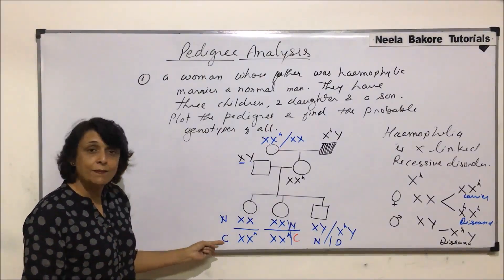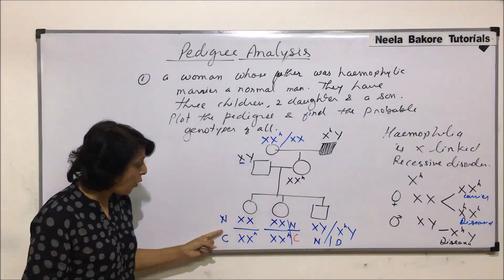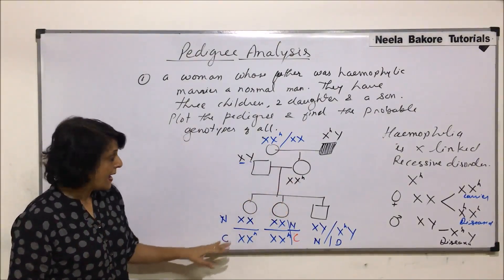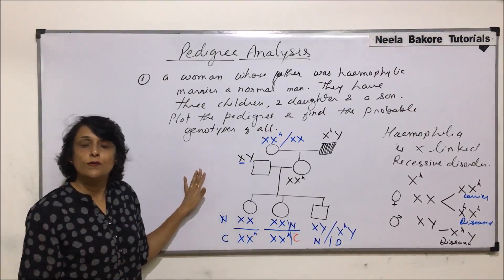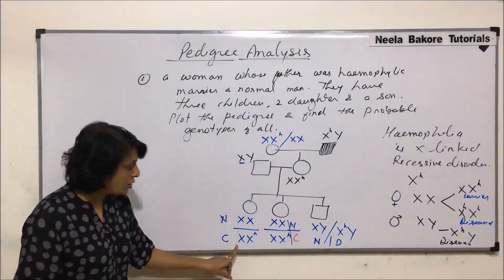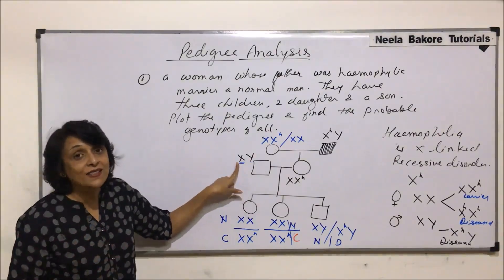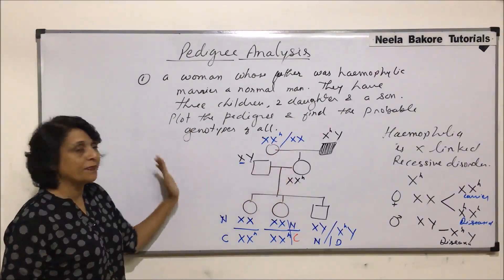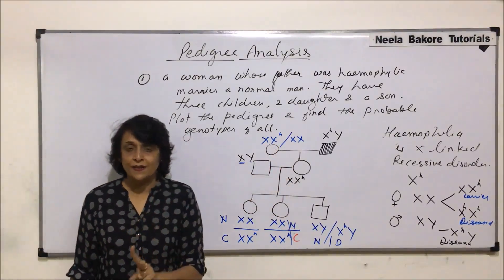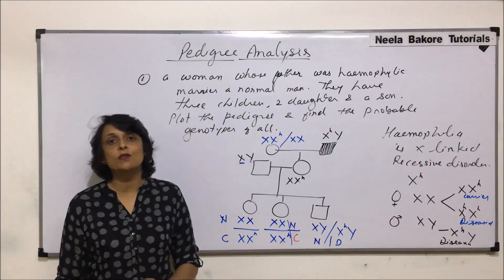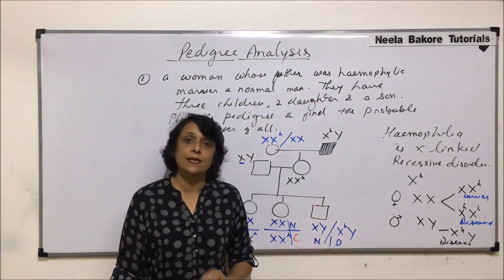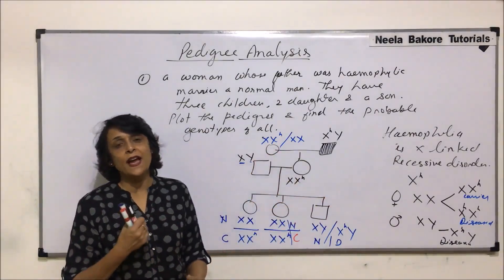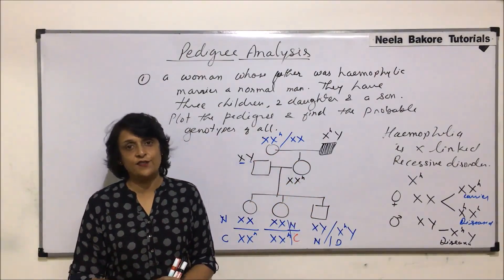The chances for daughters are only two: carrier if they receive the recessive gene from the mother, or normal if they receive the dominant gene. So if asked what percentage of daughters are diseased, the answer is 0%. For daughters to be diseased, the father must also be diseased. We have now covered two pedigrees — one on autosomal skin color inheritance and one on X-linked hemophilia. In the next segment, we will learn how to identify whether a pedigree shows dominant or recessive inheritance.